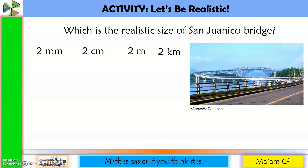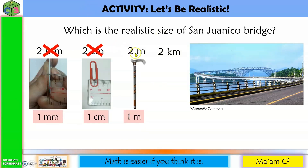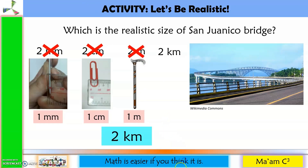Next: which is the realistic length of San Juanico Bridge — 2 millimeters, 2 centimeters, 2 meters, or 2 kilometers? Millimeters and centimeters are way too short for a bridge. Two meters is only twice the length of a walking cane — too small for a bridge. The correct answer is 2 kilometers, as bridges are usually 1 kilometer or longer.